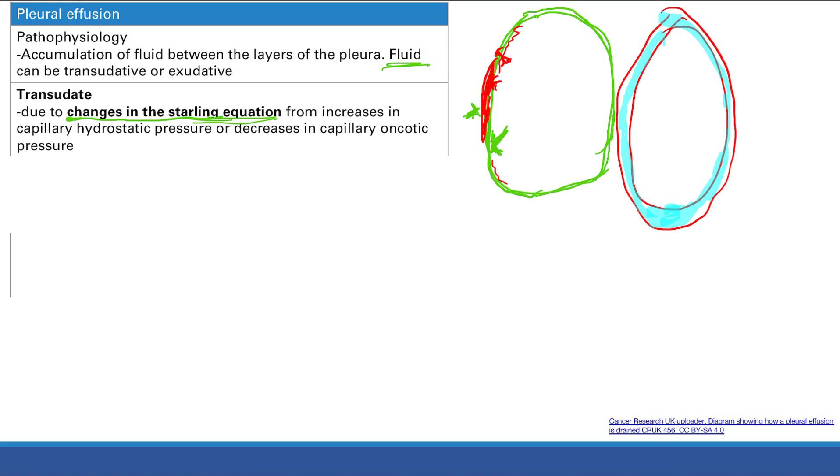Cirrhosis, the liver doesn't work, so you're not making enough protein, so there's low protein in your blood. You get decreased capillary oncotic pressure. You get a transudative pleural effusion.